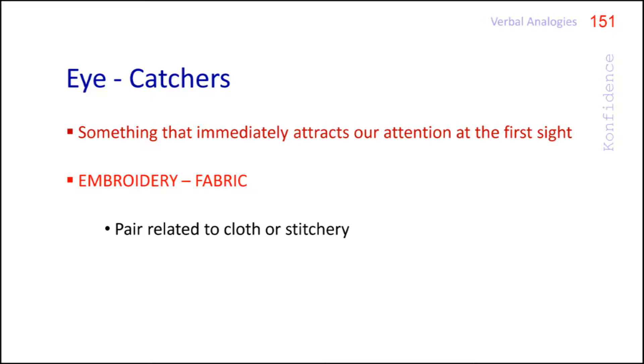In an analogy, two capitalized words are related in a particular way. Test makers create eye-catchers with pairs of words that are related in a grammatically or logically different way. This is a trap, so be careful. Take a second look to determine the exact relationship of the pairs.